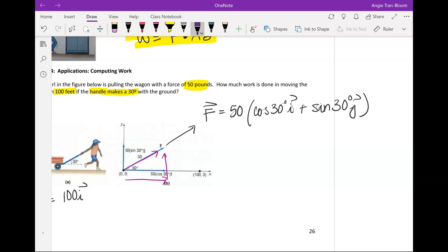Let's compute 30 degrees cosine and sine. So force equals 50 times cosine of 30 degrees is rad 3 over 2 in the horizontal direction plus sine of 30 degrees is a half in the vertical direction. We will simplify this out, which is 25 rad 3 in the horizontal direction plus 25 in the vertical direction. So we have the force vector.